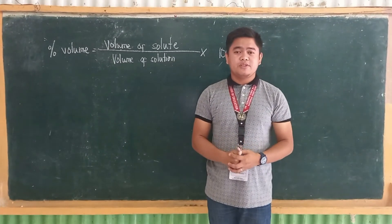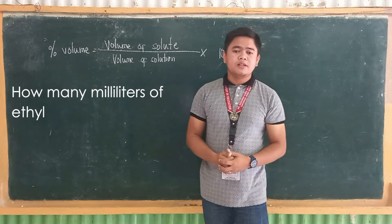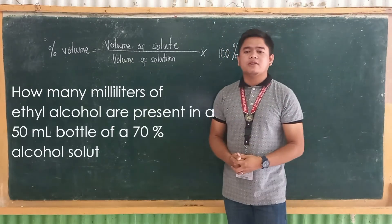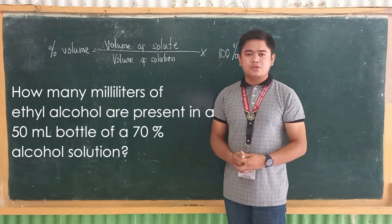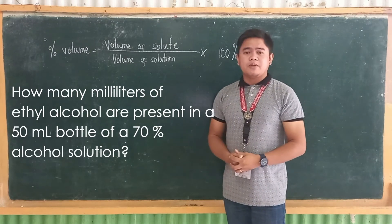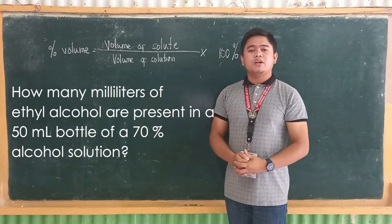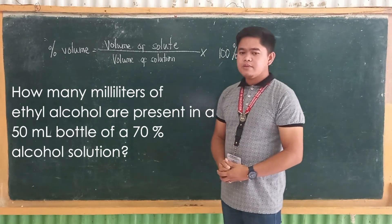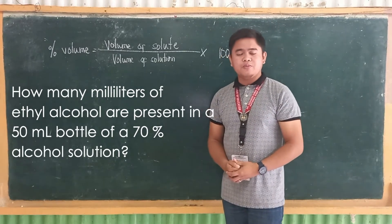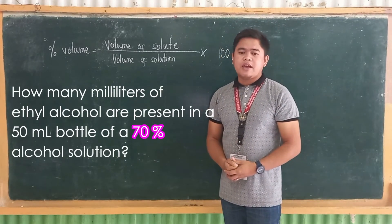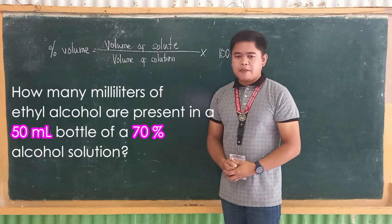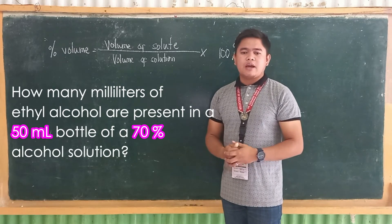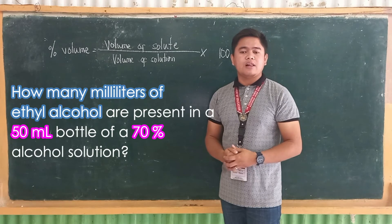Let's proceed to the next question. How many milliliters of ethyl alcohol are present in a 50 ml bottle of a 70% alcohol solution? This problem is quite different. The given are the percentage by volume, which is 70%, and the volume of solution, which is 50 ml. What is asked? How many milliliters of ethyl alcohol — so the volume of solute.